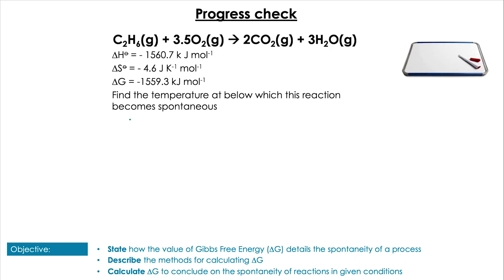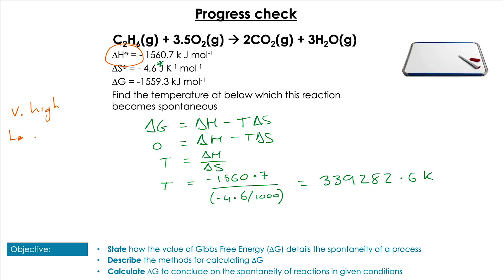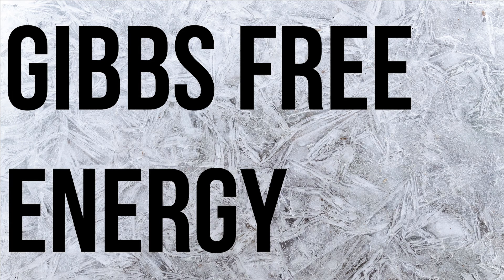For the next question, we need to find the temperature below which the reaction becomes spontaneous. To find the temperature of spontaneity, set ΔG = 0 and rearrange to get T = ΔH / ΔS. That gives T = −1560.7 divided by (−4.6 / 1000), which equals approximately 339,282 kelvin. This may seem very high, but this is a combustion reaction and we'd expect this for very exothermic reactions. There's no practical work to go with this, but there are questions on a worksheet. Thanks for joining me — don't forget to like, subscribe, hit the bell icon, and as always, practice makes slightly better!